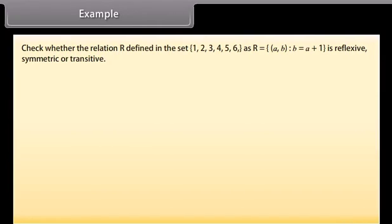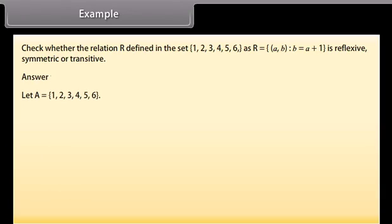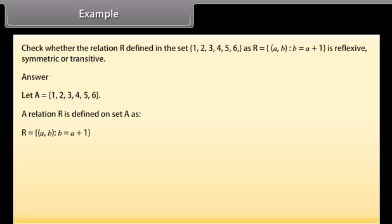Example: Check whether the relation R defined in the set {1, 2, 3, 4, 5, 6} as R = {(a, b) such that b = a + 1} is reflexive, symmetric, or transitive. Answer: Let A = {1, 2, 3, 4, 5, 6}. A relation R is defined on the set A as R = {(a, b) such that b = a + 1}. Therefore, R = {(1,2), (2,3), (3,4), (4,5), (5,6)}.